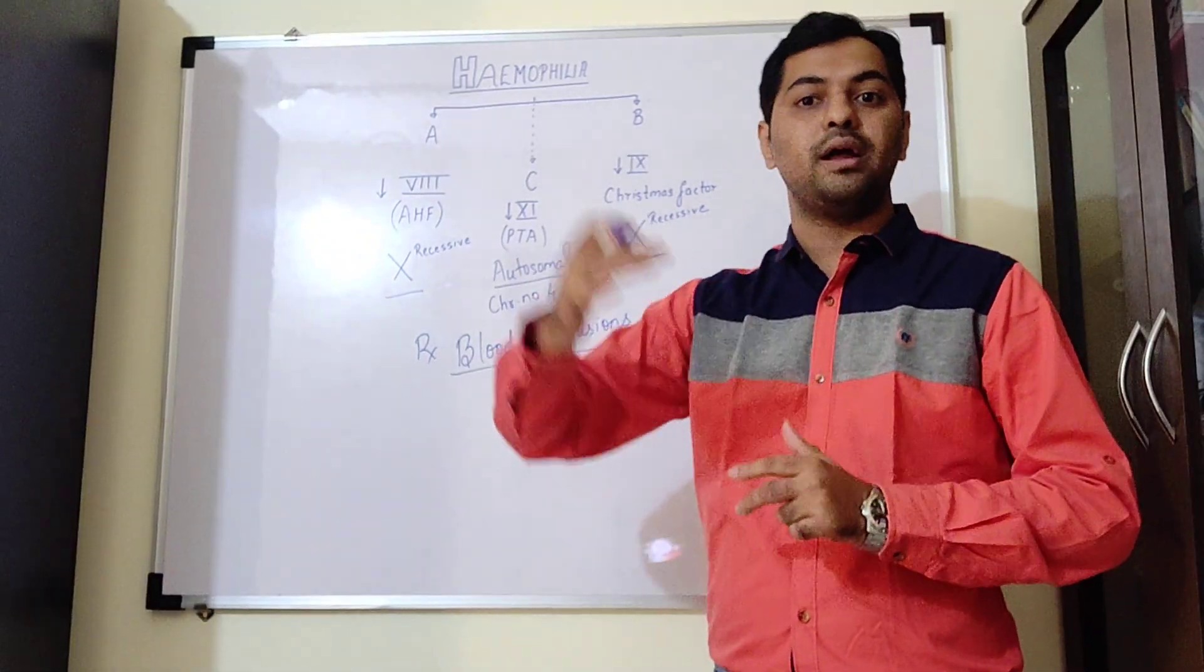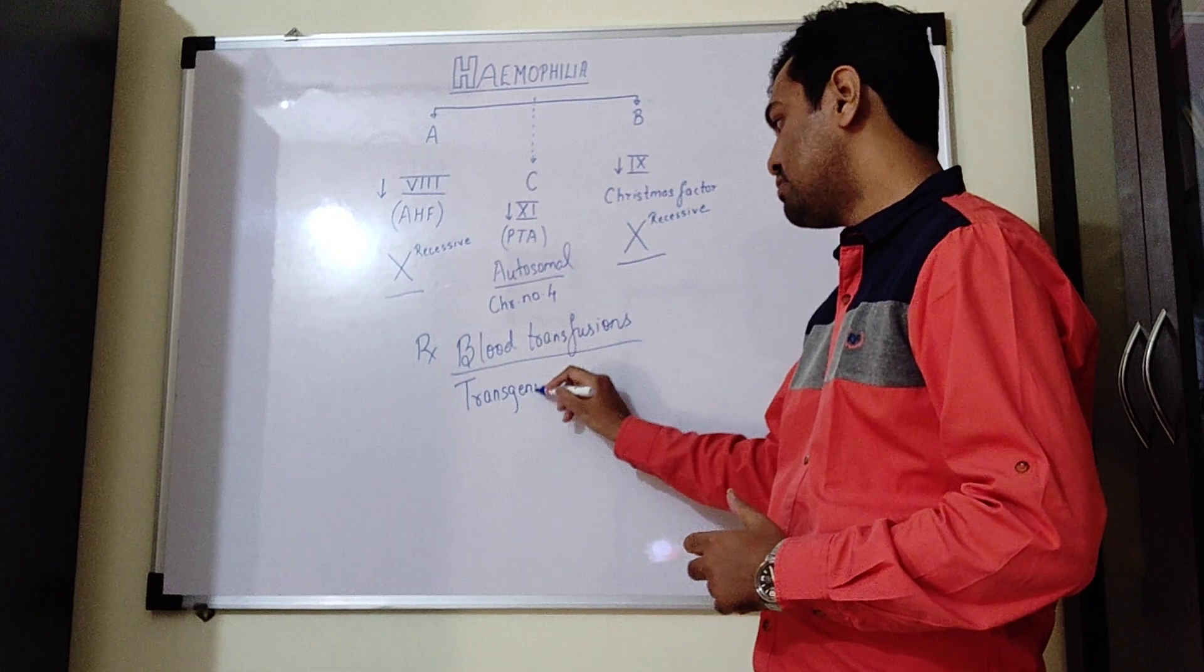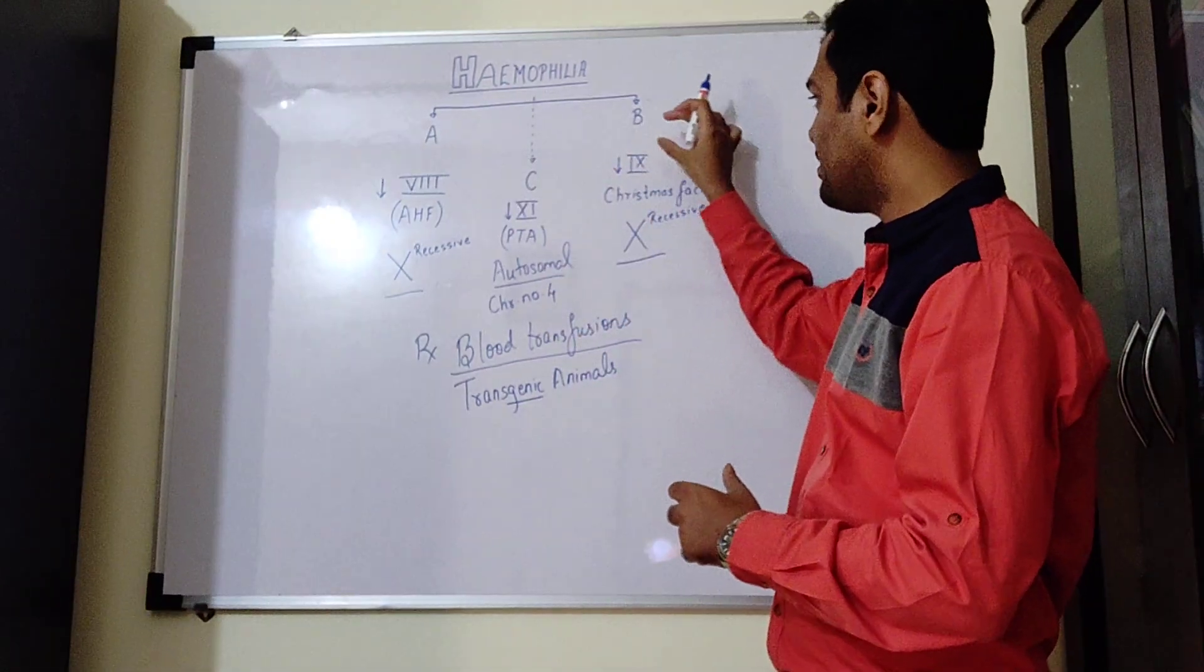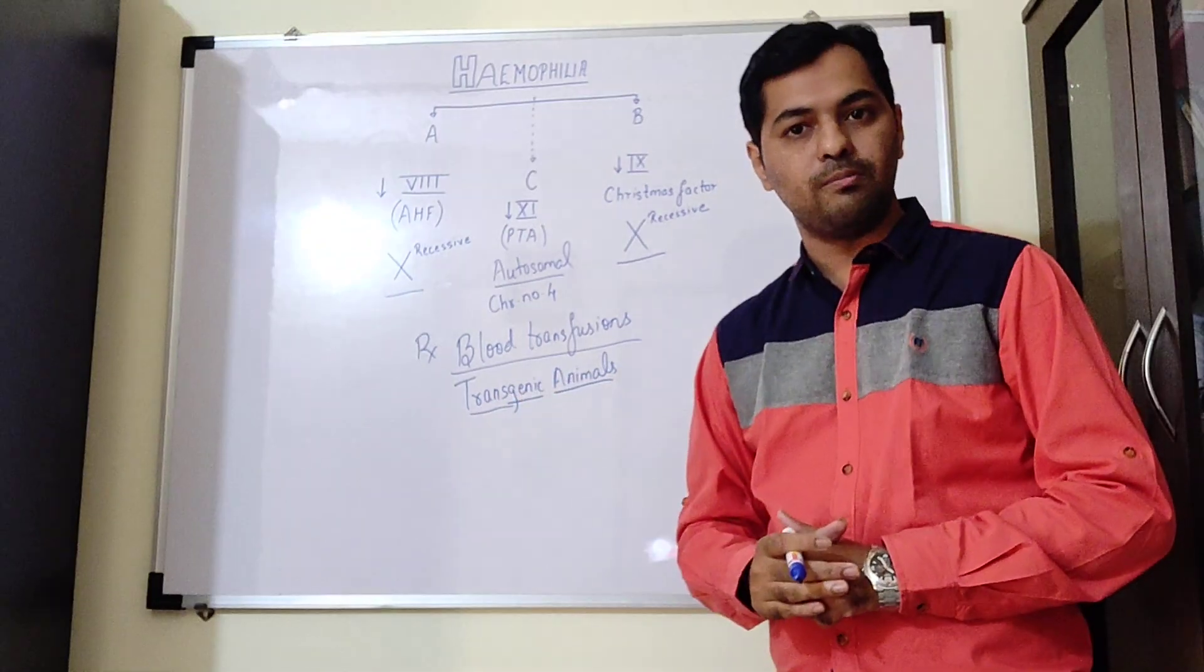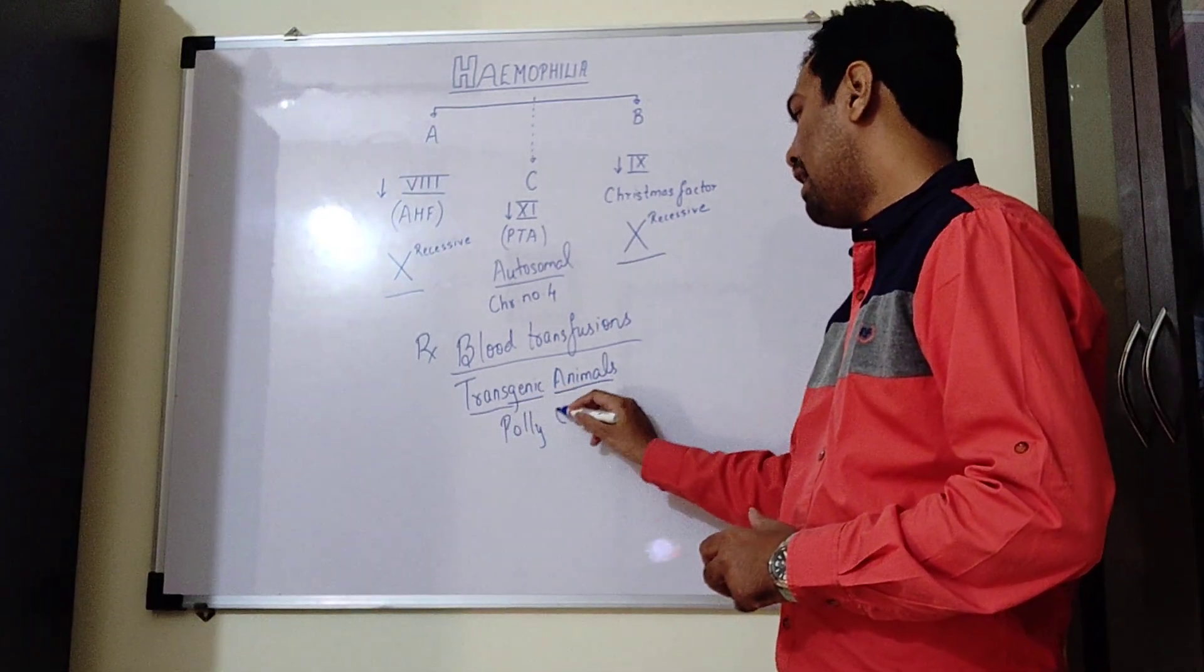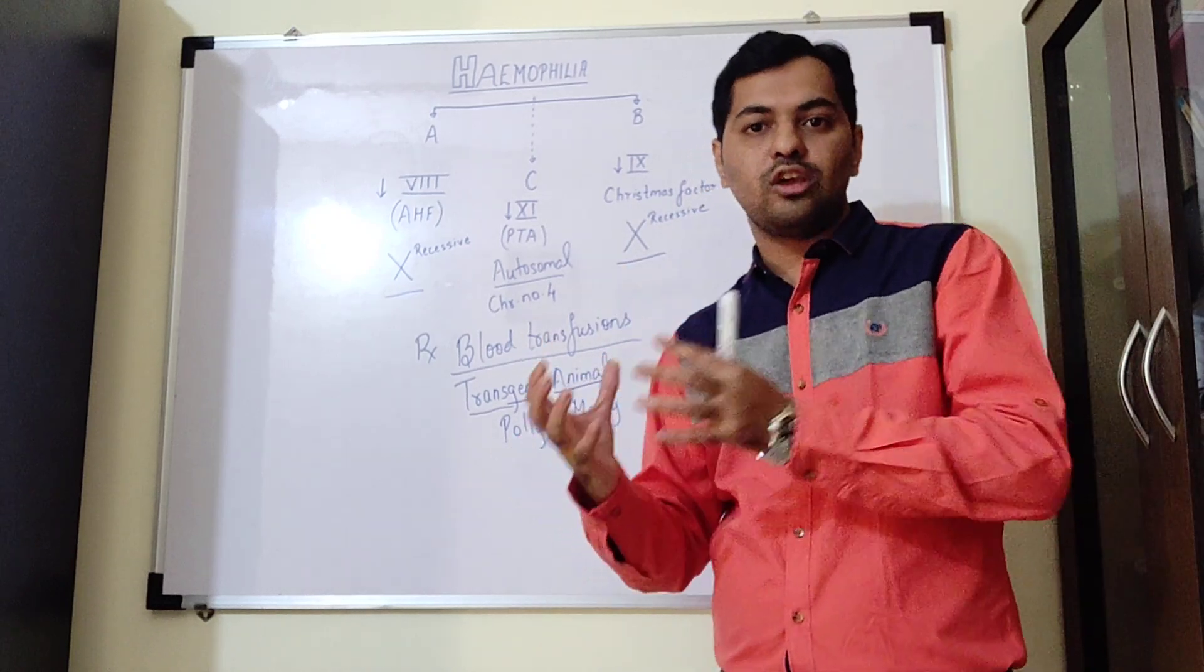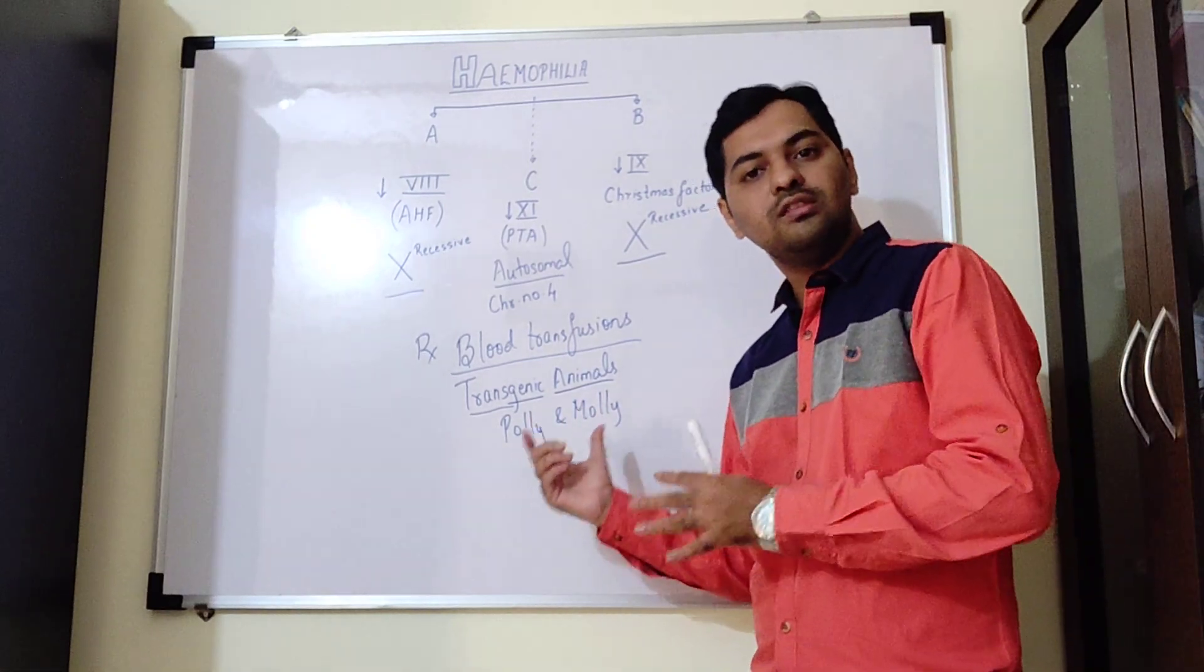Going one more step ahead, scientists have developed certain transgenic animals as well. These transgenic animals have a gene which codes for clotting factor 8 as well as clotting factor 9. Specifically, the gene for clotting factor 9 has been transferred into an animal and transgenic animals were developed. The first transgenic animals that were developed having clotting factor 9 were Polly and Molly, which are two types of sheep. These sheep varieties were cloned, and the concept of recombinant DNA technology, that is genetic transfer, was also performed in these two sheep.